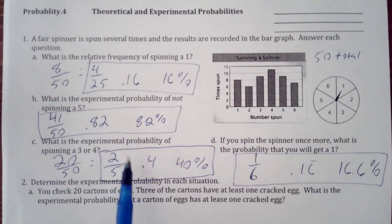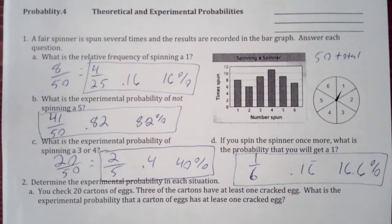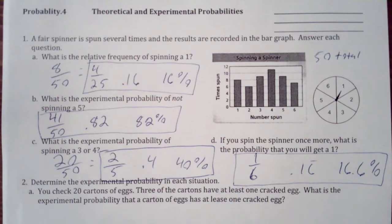So these first three, we are dealing in our experimental probabilities, using what we gathered from our data. And then in part D, we actually went back to theoretical probability, where we just talked about what is my probability of the next spin.